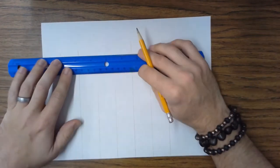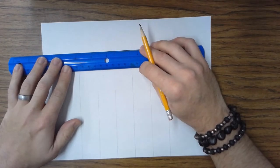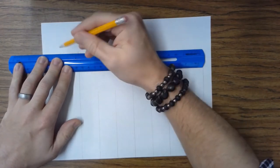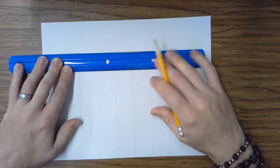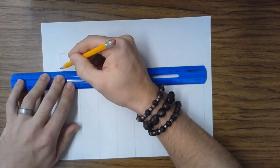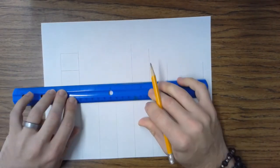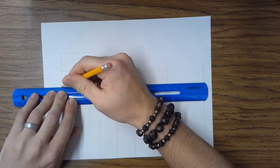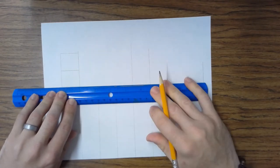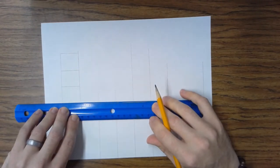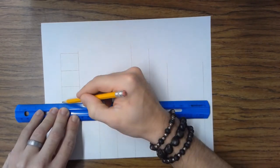Now what we need to do is start turning these into boxes. So we're going to take our straight edge and we're going to go across the horizontal here, going sideways. And we're just going to start making boxes. Remember to draw lightly so that you can erase if you make a mistake.